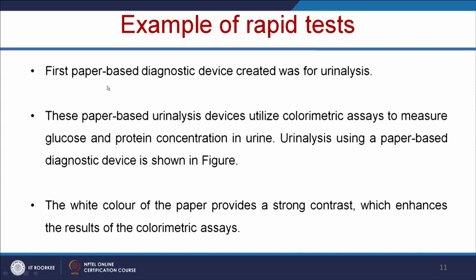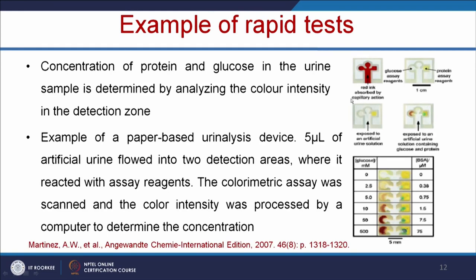The first paper-based diagnostic device was created for urine analysis. These paper-based urine analysis devices utilize colorimetric assays to measure the glucose and protein concentration in urine. The white color of the paper provides a strong contrast, which enhances the results of the colorimetric assays. This is a simple paper-based rapid kit for measuring glucose or protein concentration in a urine sample. When you add the sample, a color on one side indicates the presence of glucose, and color on the other side indicates the presence of protein. With respect to concentration, the intensity of the color increases. Using a strip reader, we can easily read the color intensity and estimate the concentration of glucose and protein in the urine sample.